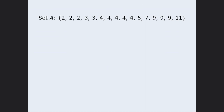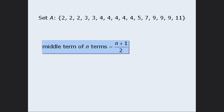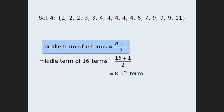There are 16 numbers in this list, so where is the middle term? We can find the middle number using this formula. The middle term of 16 values is equal to 16 plus 1, divided by 2, which equals 8.5. This means that the median lies between the 8th and 9th terms. When this occurs, the median will equal the average of the two terms on either side. The average of 4 and 4 is 4, so the median of set A is 4.